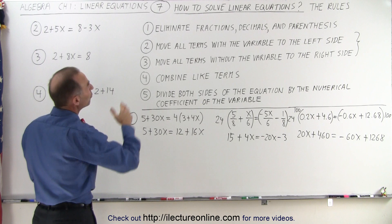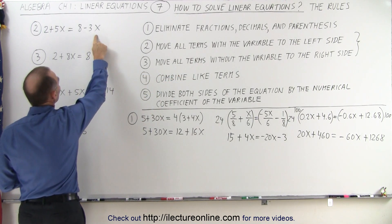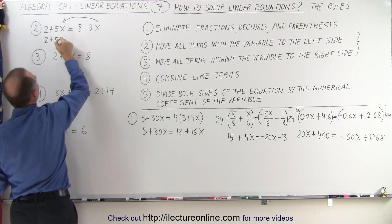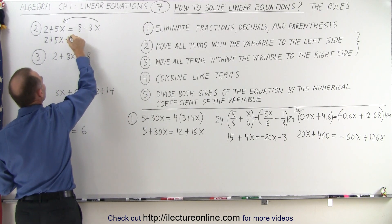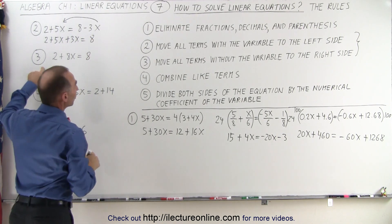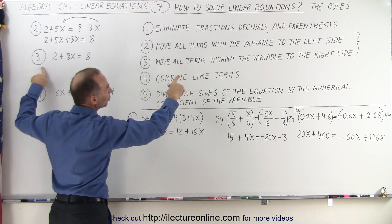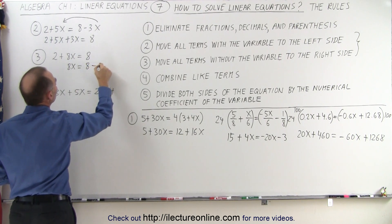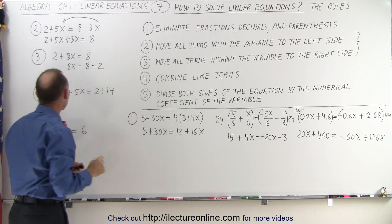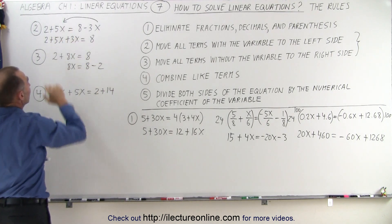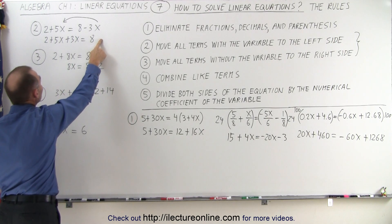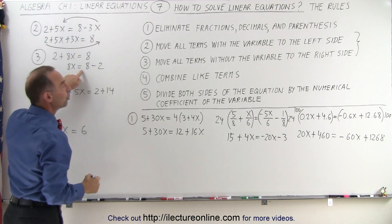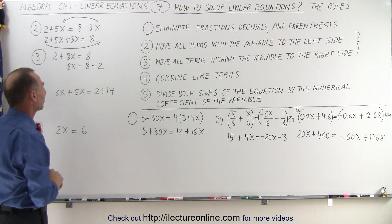For rule number 2, we move all the terms with the variable to the left side. We have a minus 3x on the right side, so we move it to the left side — it becomes a plus 3x, giving us 2 plus 5x plus 3x equals 8. For rule number 3, we move all terms without the variable to the right side. The 2 goes to the right side, so this becomes 8x equals 8 minus 2. We could have moved both the minus 3x and the plus 2 at the same time.